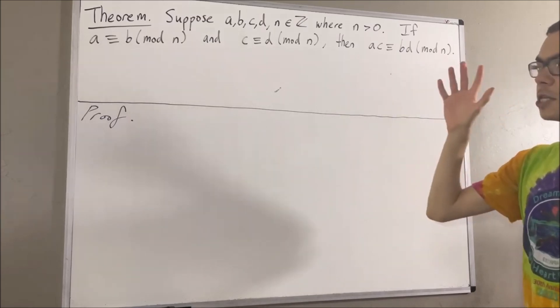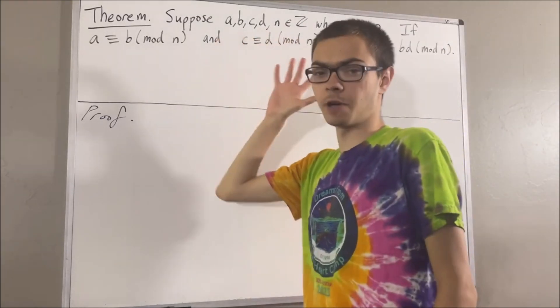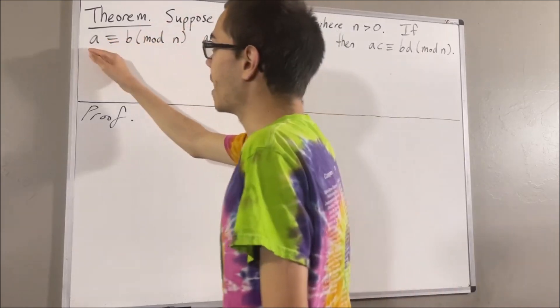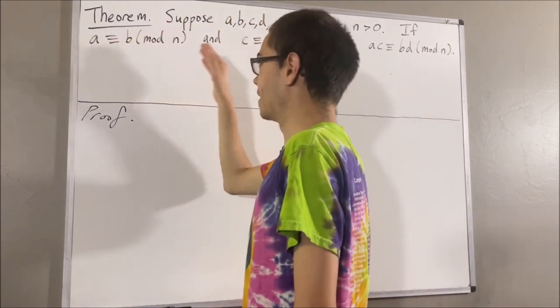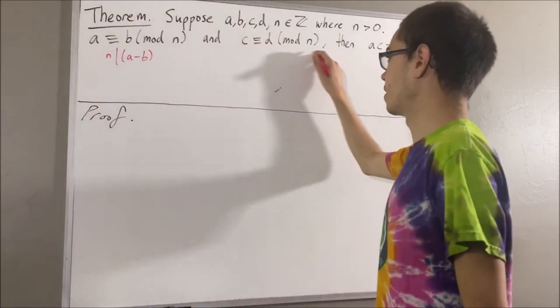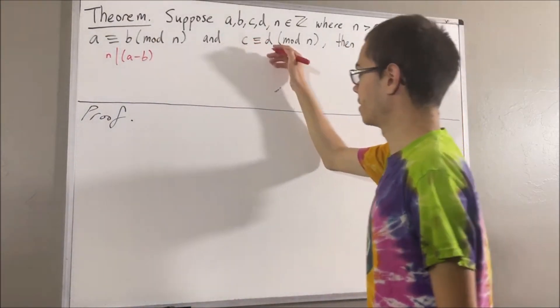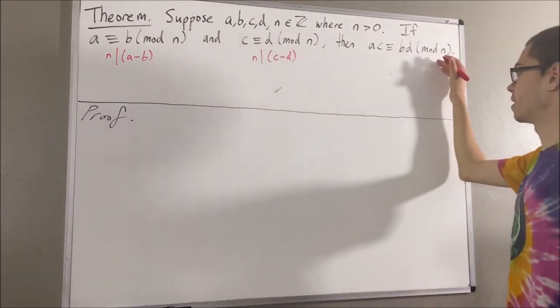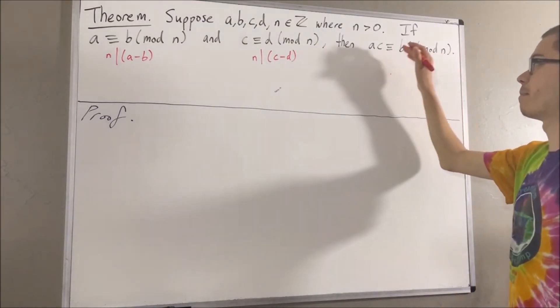Now, our definition of congruence modulo n is as follows. To say that a is congruent to b modulo n means n divides a minus b. Similarly, this means n divides c minus d, and this means n divides ac minus bd.